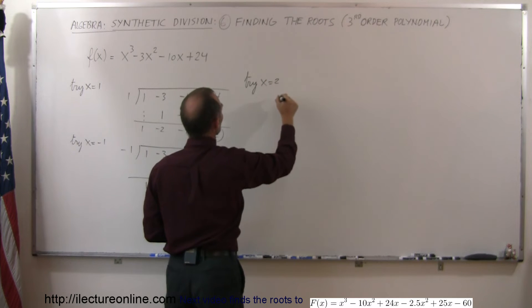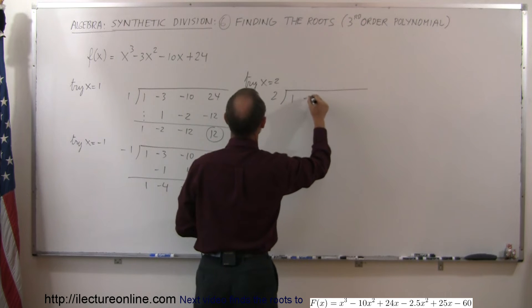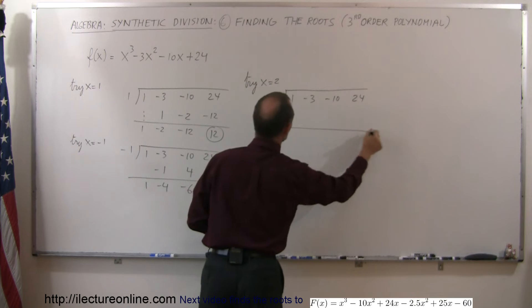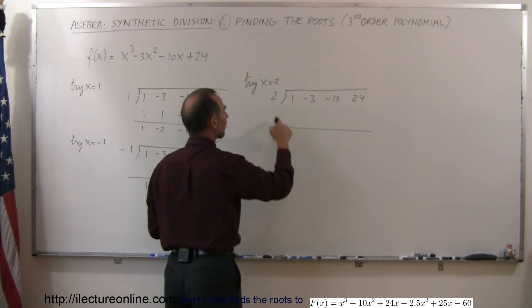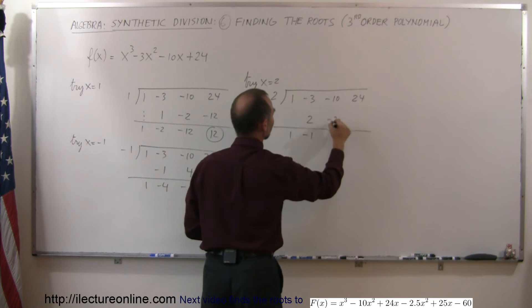So let's see what happens when now I try x equals 2. So I put my 2 down here, my division symbol, the same coefficients. 1, negative 3, negative 10, 24. Put the line down here, drop the 1. 1 times 2 is 2. Add them together, negative 1. Negative 1 times 2 is negative 2.